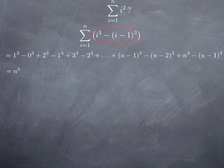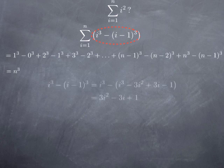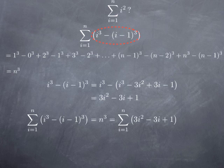On the other hand, we can rewrite the expression, the function of the index that we are summing. Because if I expand the cube, i minus 1 cubed, this is i cubed minus 3i squared plus 3i minus 1. So in my difference, the cubes cancel out and I get only 3i squared minus 3i plus 1. So that means that I have the sum that is equal to n cubed and that I can rewrite as the sum from 1 to n of 3i squared minus 3i plus 1.